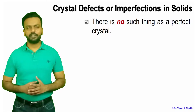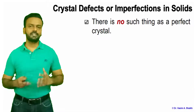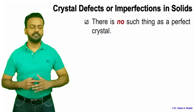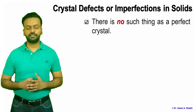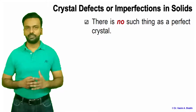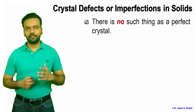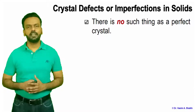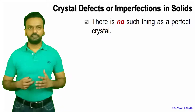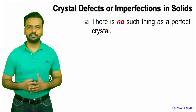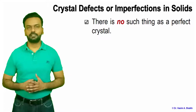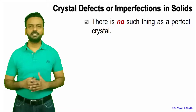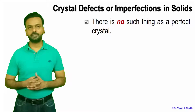Crystal defects or imperfections in solids. There is no such thing as a perfect crystal. Whenever a material is solidified from a liquid to a solid state, there are a lot of defects which develop in the material and these defects develop automatically. It is inherent in the process that a lot of defects are produced and basically we cannot do anything about these defects.